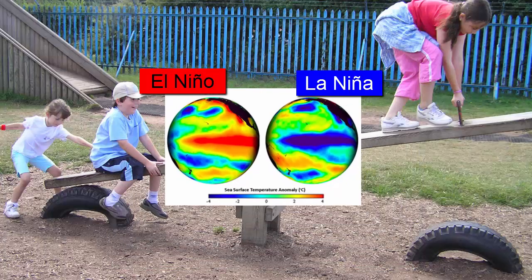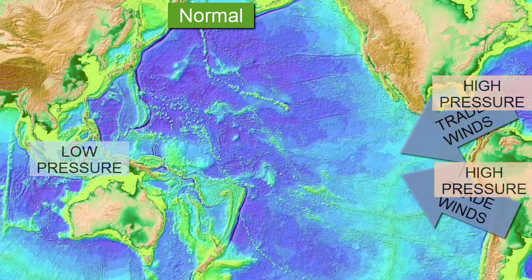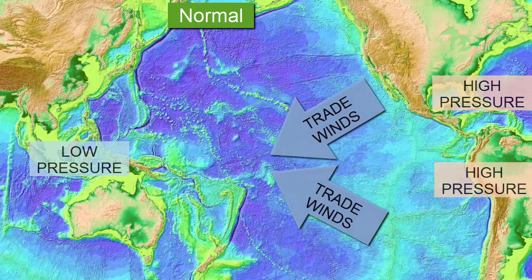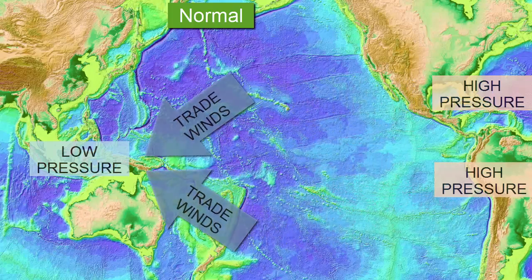Imagine being on a seesaw that goes back and forth with a somewhat erratic frequency and raises you a varying amount of height each time. The middle or normal state was discussed in previous air circulation and current videos. The trade winds blow across the equatorial Pacific from a high pressure system in the east towards a low pressure in the west.